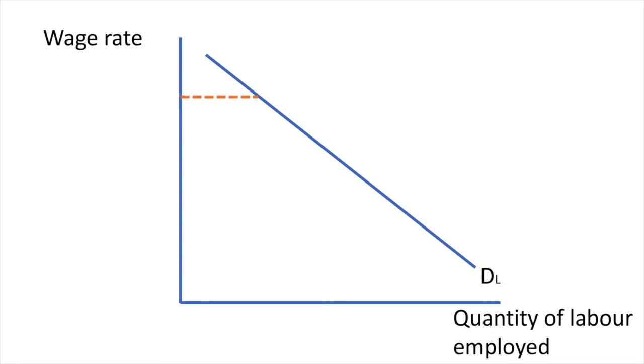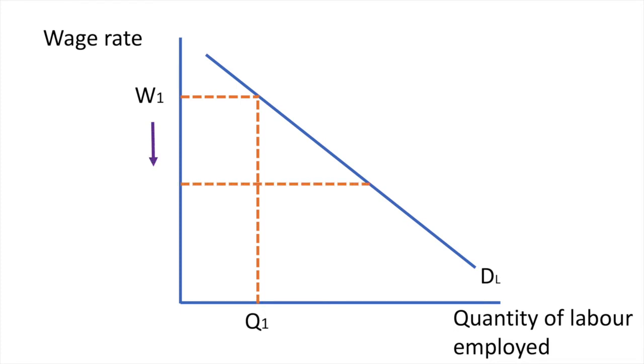This can be demonstrated by the fall in wages from W1 to W2, resulting in an increase in the quantity of labour demanded from Q1 to Q2.